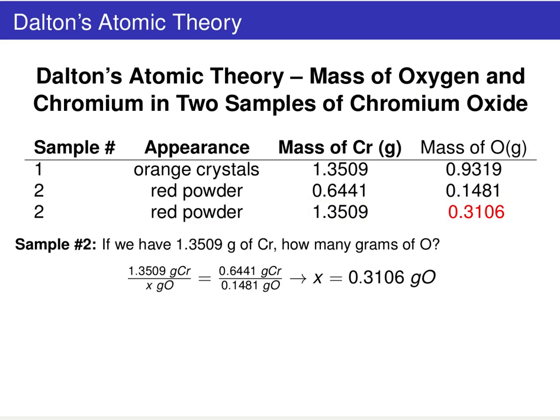Hopefully what you noticed is that when you look at the ratio between chromium and oxygen, this ratio must remain fixed — assuming you are looking at a given chemical compound.